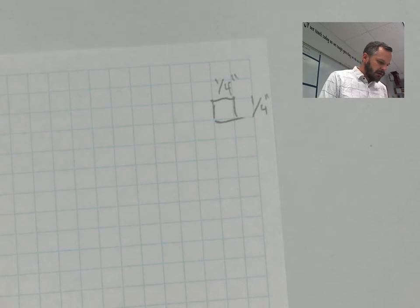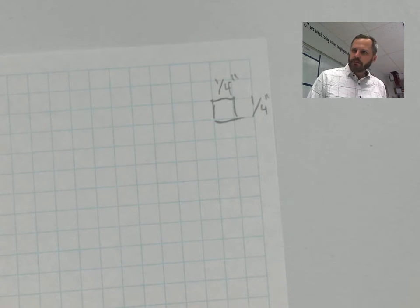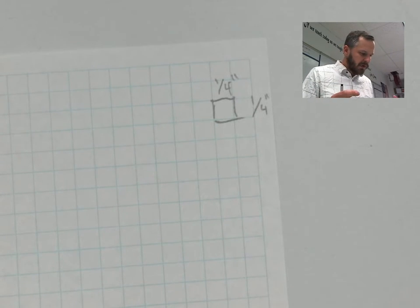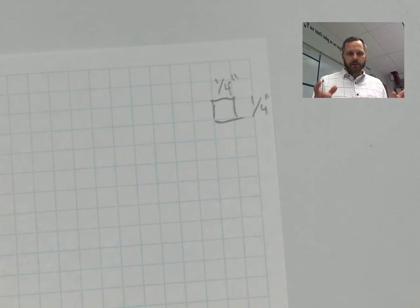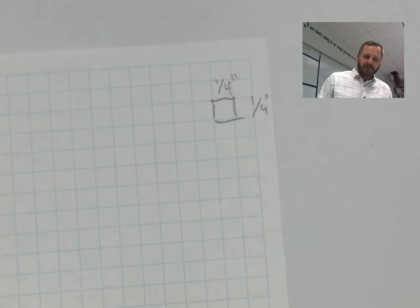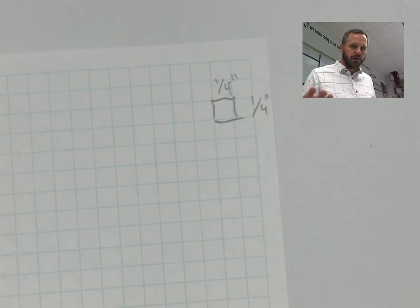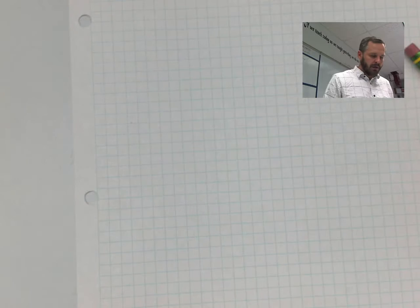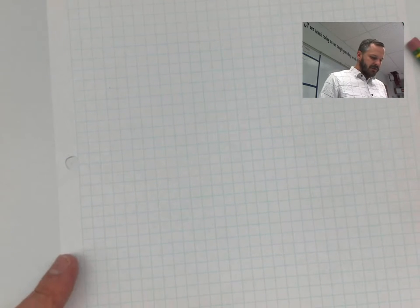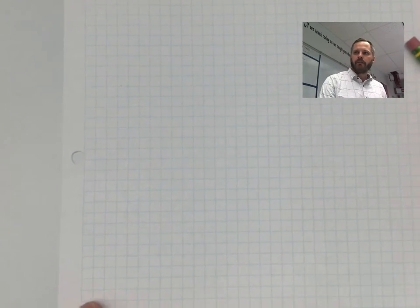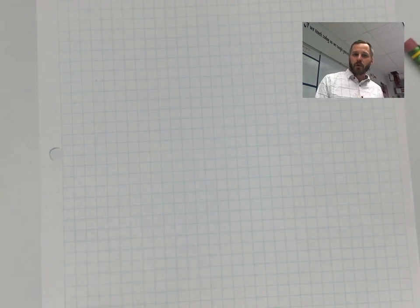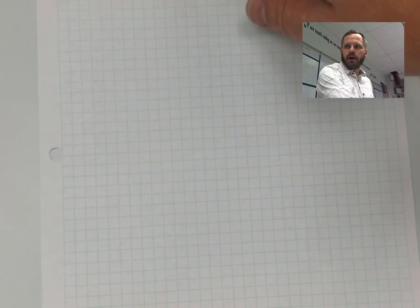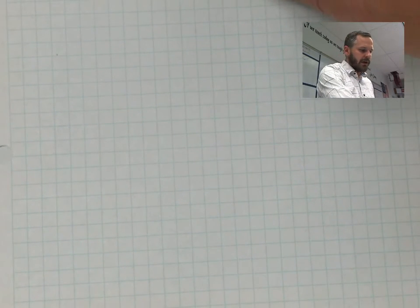If I measure this graph paper, I can see that each square — one, two, three, four of them make up an inch, which means each square is a quarter of an inch. One little square is one quarter of an inch by one quarter of an inch. We're going to use that to our advantage — that way we can just count squares sometimes and don't have to measure everything. Four squares to an inch is why they call it quad-ruled graph paper. Not every graph paper is like that, but most graph paper you will see is quad-ruled.